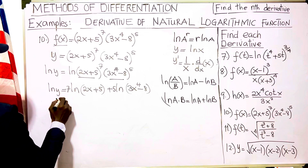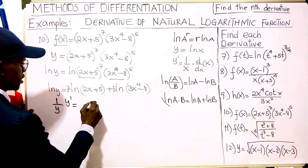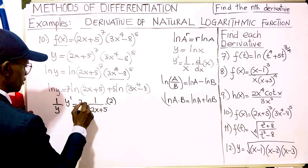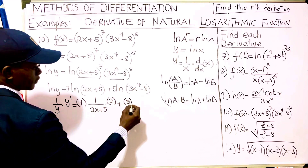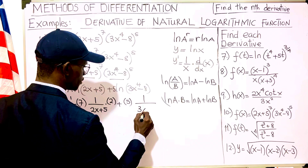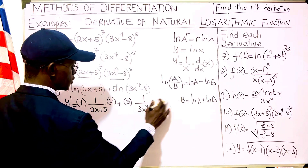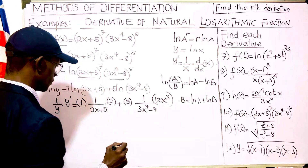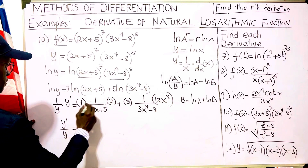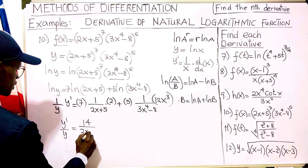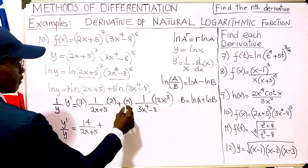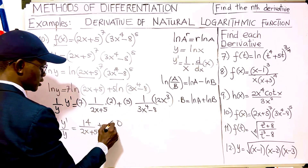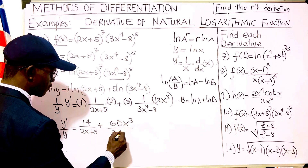Now we find the derivative. We get 1/y · y prime equals 7 times 1/(2x+5) times the derivative of 2x, which is 2, plus 5 times 1/(3x⁴ − 8) times the derivative of 3x⁴, which is 12x³. So y prime over y equals 14/(2x+5) plus 60x³/(3x⁴ − 8).